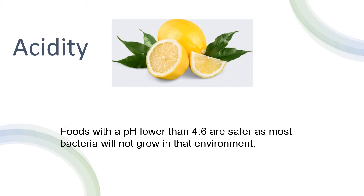The second letter is A for acidity. The acidity level of food plays an important role in preventing the growth of bacteria. Acidic foods such as citrus fruits, tomatoes, and vinegar can help to inhibit the growth of bacteria. It is important to note that some types of bacteria thrive in low-acid environments, such as those found in meats and dairy products. The acidity or alkalinity of food is measured by its pH from 0 to 14. Foods with a pH lower than 4.6 are safer, as most bacteria will not grow in that environment.